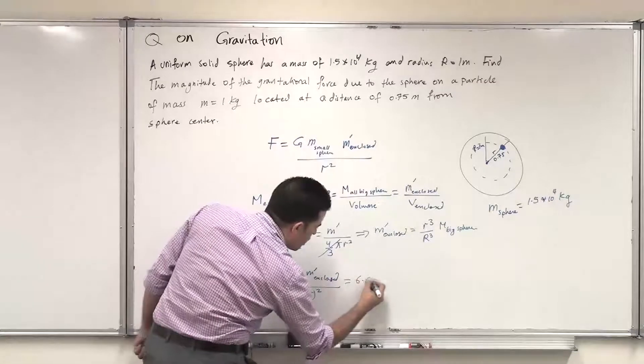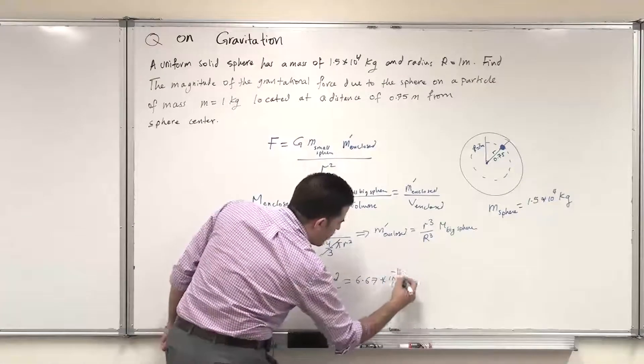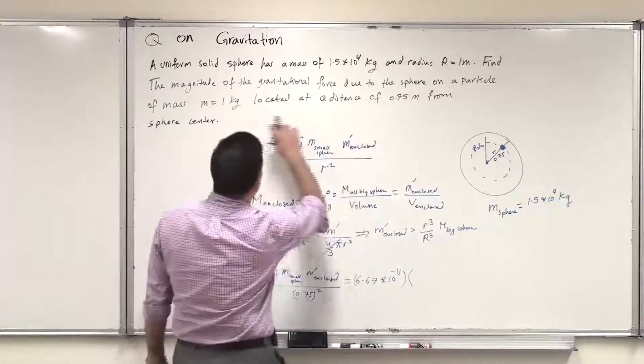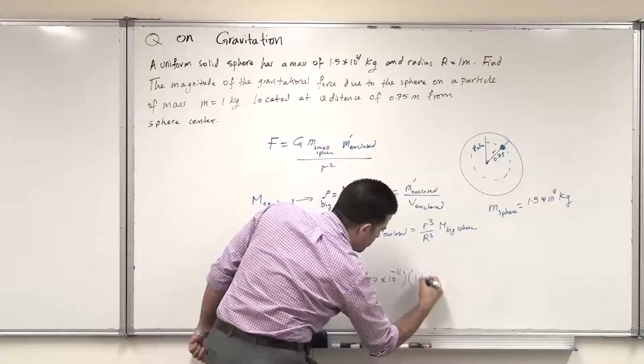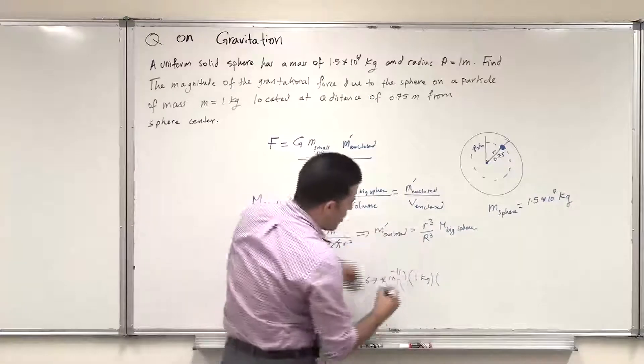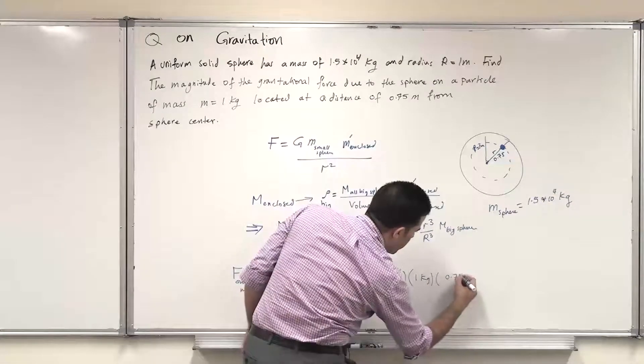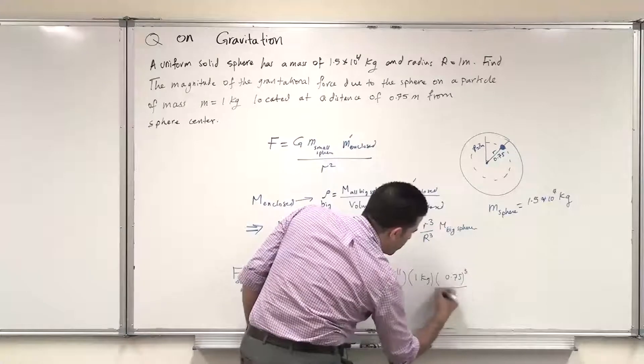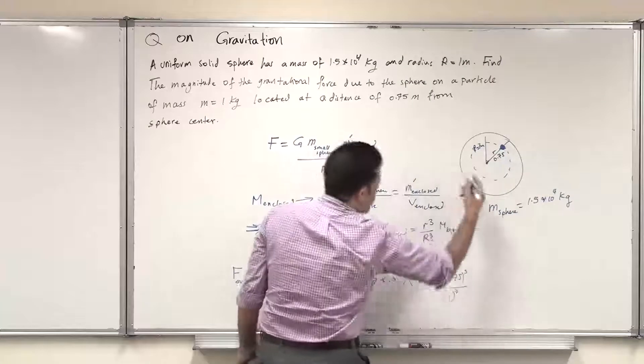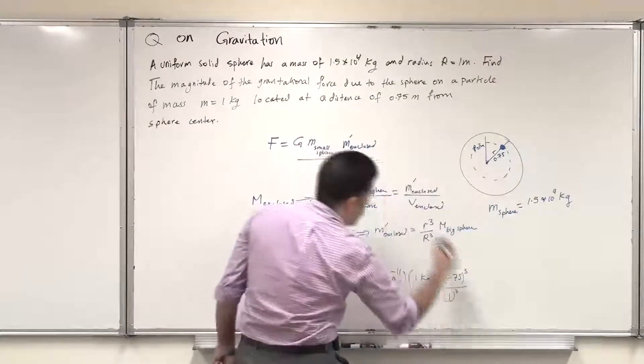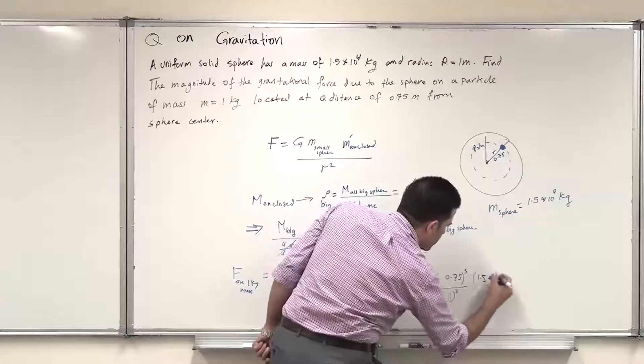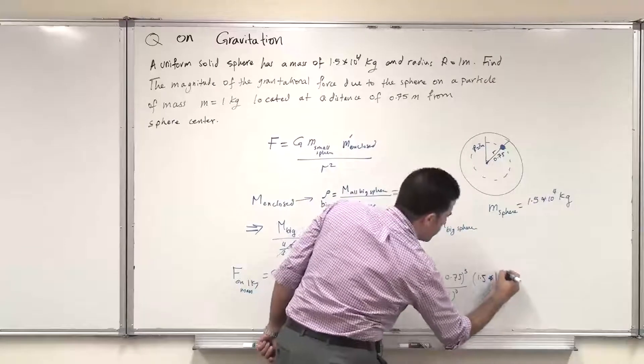Which equals 6.67×10^-11, multiplied by the mass of the small sphere, which is 1 kilogram, multiplied by the mass enclosed, which is now given as r^3, which is 0.75^3 divided by 1^3, multiplied by the mass of the big sphere, which is 1.5×10^4 kilograms.